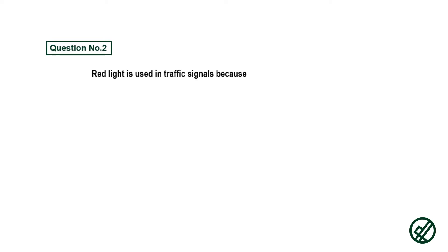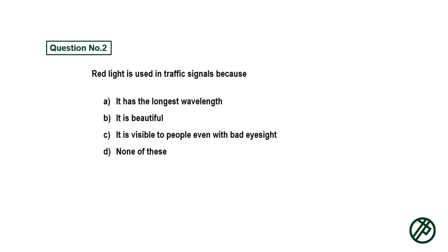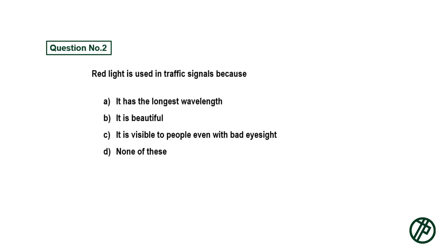Question number two: Red light is used in traffic signals because — option A: it has the longest wavelength, option B: it is beautiful, option C: it is visible to people even with bad eyesight, option D: none of these. Answer is option A: it has the longest wavelength.